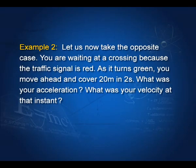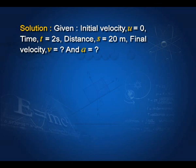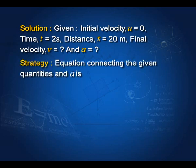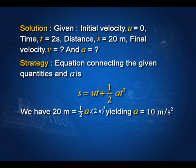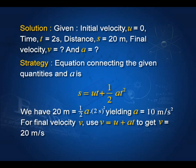Opposite case: waiting at a crossing, as the signal turns green you move ahead and cover 20 meters in 2 seconds. Initial velocity u is 0. Using s equal to ut plus half at squared, we find a equal to 10 m/s². Then using v equal to u plus at, substituting u, a, and t equal to 2 seconds, we get v equal to 20 meters per second.